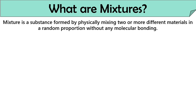Now, let us understand what mixtures are. Any substance that is formed by physically mixing two or more different materials in random proportion without any molecular bonding is referred to as a mixture. Chemistry considers mixtures as impure matter as there is random mixing of constituents.